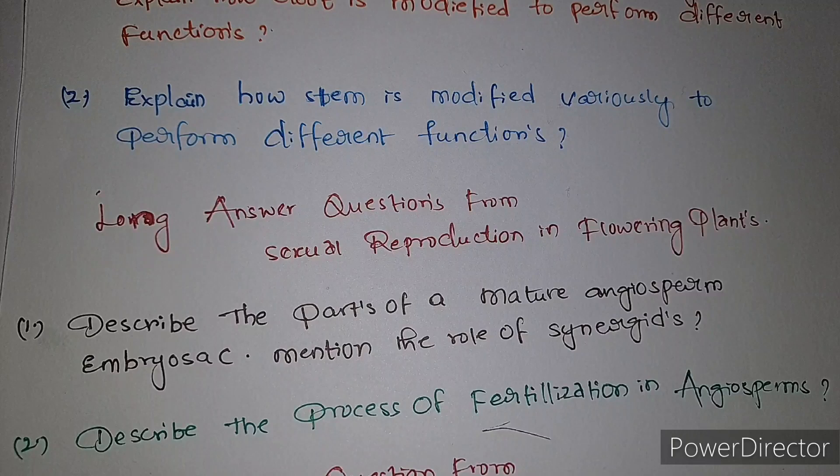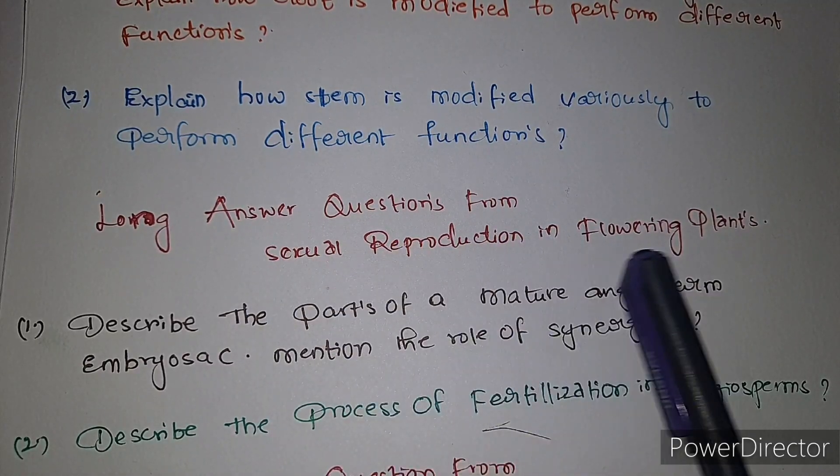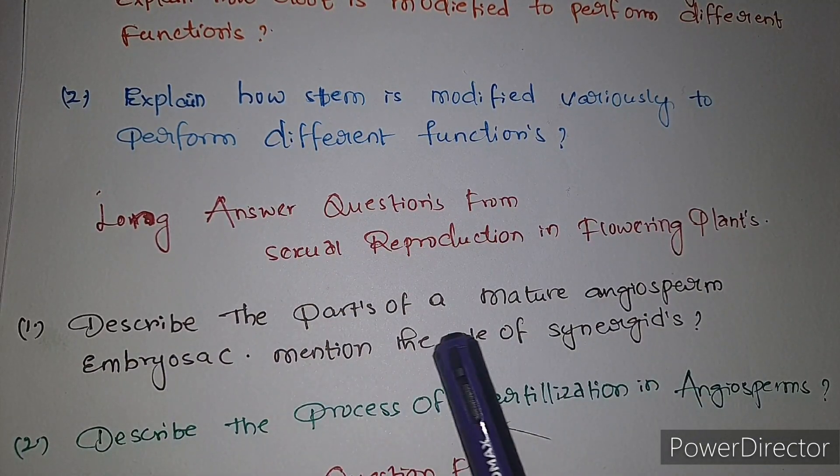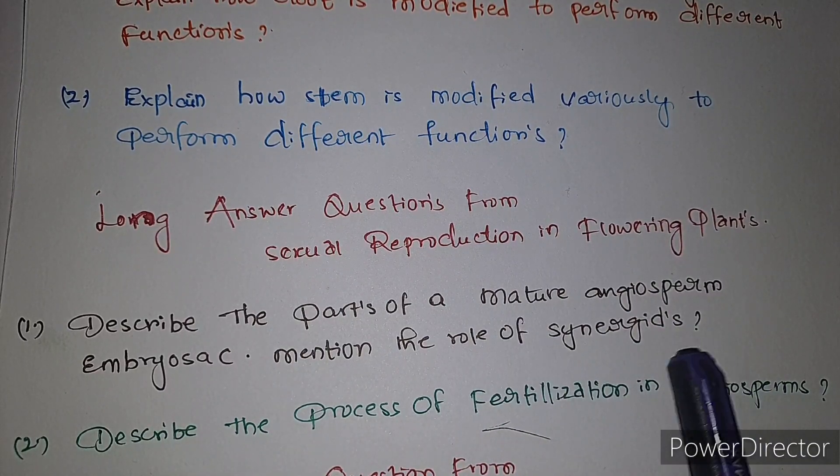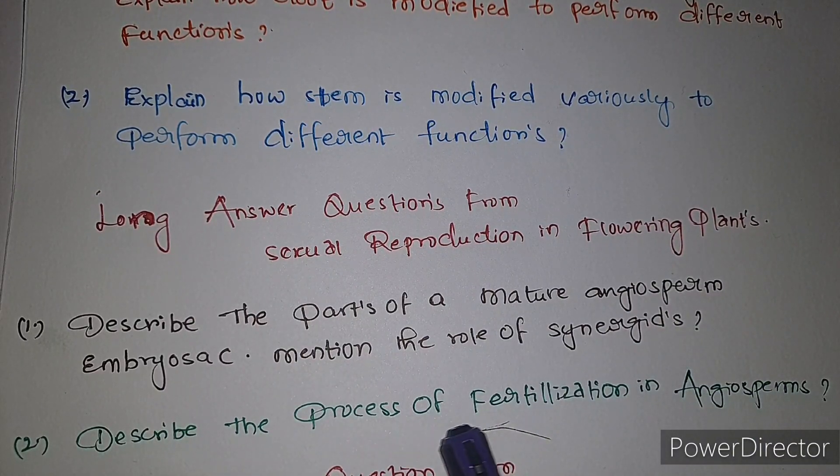Long answer questions from sexual reproduction in flowering plants. First question: describe the parts of a mature angiosperm embryo sac and mention the role of synergids. Second question: describe the process of fertilization in angiosperms.